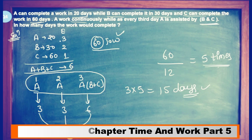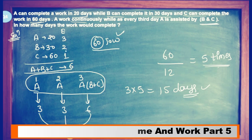We divided the total work by efficiency: A gets 3, B gets 2, C gets 1. Adding them: A plus B plus C combined efficiency is 3 + 2 + 1 = 6 units.